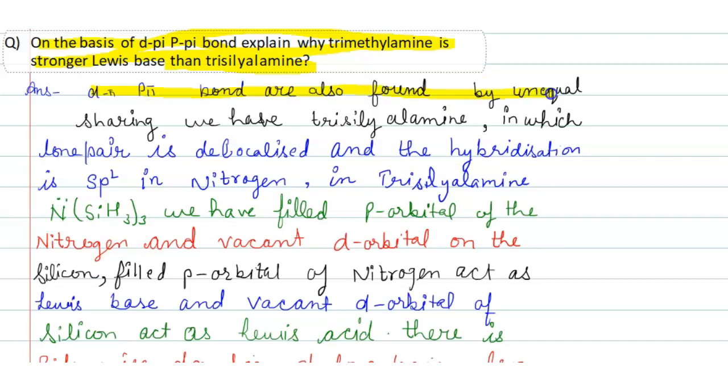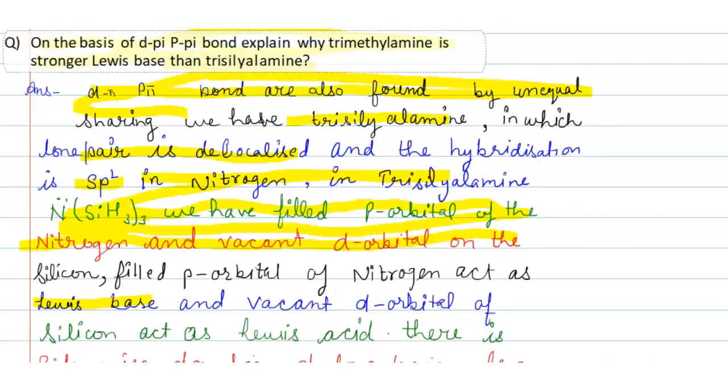D(pi)-p(pi) bonds are also formed by unequal sharing. In trisilylamine, the lone pair is delocalized and hybridization is sp2. In this compound, hybridization of nitrogen is sp2. In trisilylamine, the structure has filled p orbital of nitrogen and vacant d orbital on silicon. The filled p orbital of nitrogen acts as Lewis base, and the vacant d orbital of silicon acts as Lewis acid.